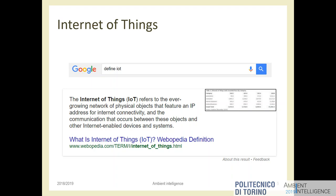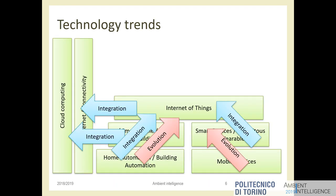The IoT definition shows how general it is — any object given connectivity is part of the so-called IoT. But the definition doesn't say what for, or why. Why give an IP address to a bottle of water? Maybe it's useful, maybe not — it depends on the application. The focus we want is on when all these technologies mix and integrate together, evolving into something smarter and smarter.